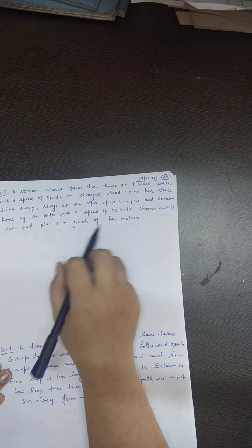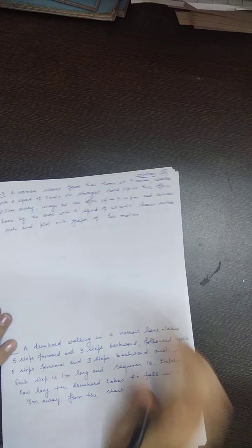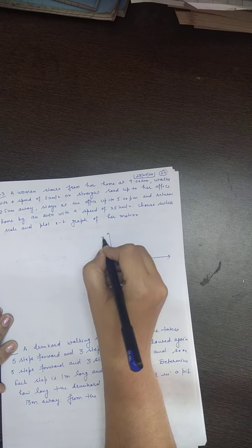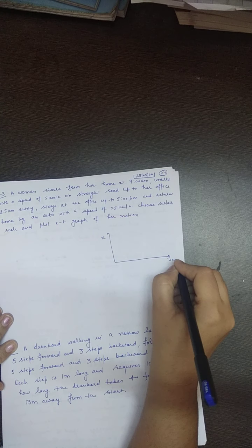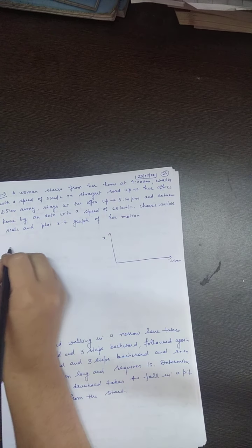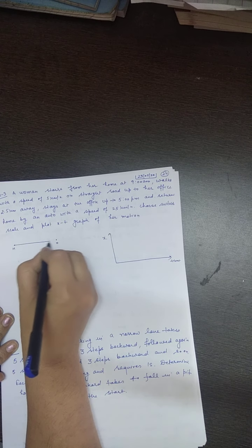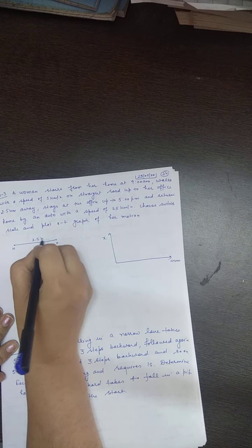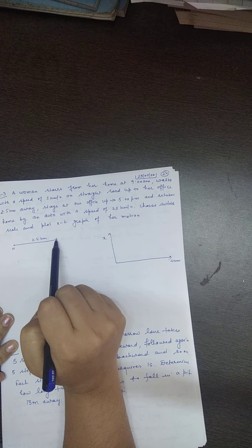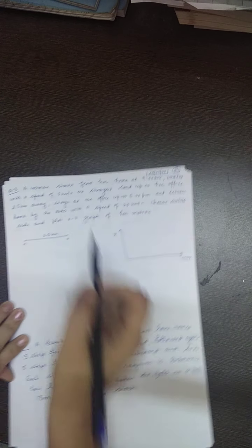Choose a suitable scale and plot the x-t graph of her motion. Student, to plot an x-t graph means you need a position-time graph. You know the position of the office is 2.5 km away from her home. So this is the home and this is the office, 2.5 km.